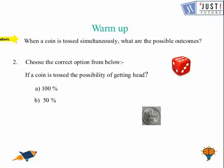So here when a coin is tossed simultaneously, what are the possible outcomes? So there are only two outcomes, which is head and tail.